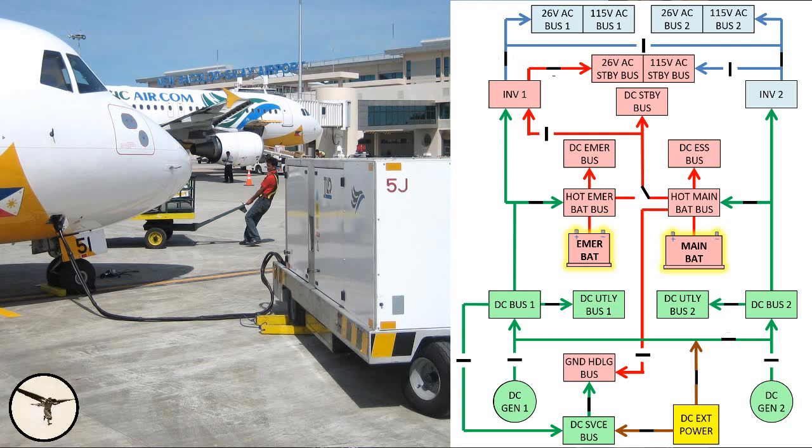When external power is connected, the DC generators are disconnected automatically, and the ground handling bus is powered by external power via DC service bus.